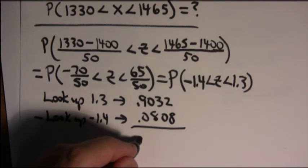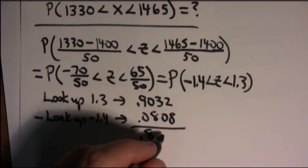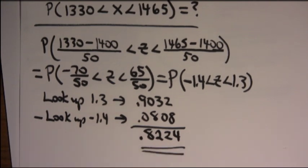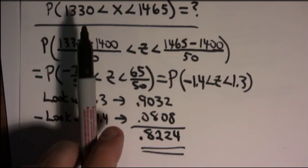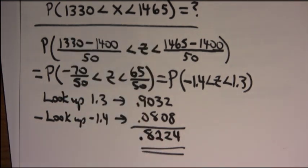And what I end up with is .8224. So, the probability that X is between 1330 and 1465 is a little over 82%. And that's how you approach these problems. Of course, you can have word problems and things can get a little more complicated. But basically, that's the approach. And if you know the basics, the rest is just working your way up and practicing a lot.